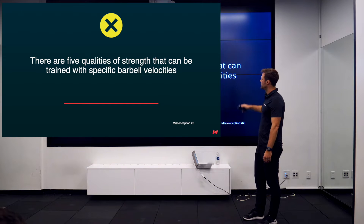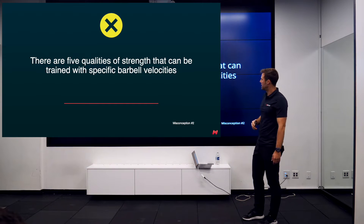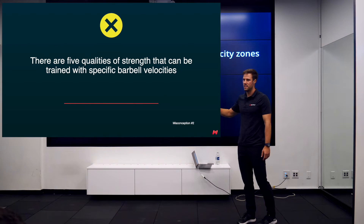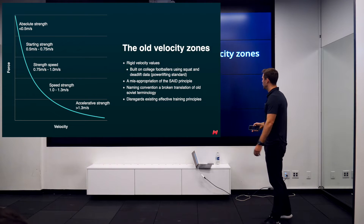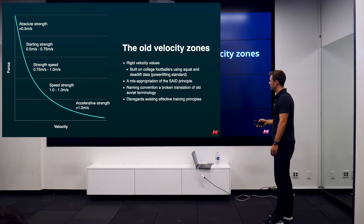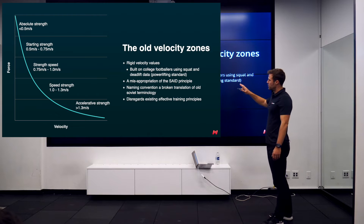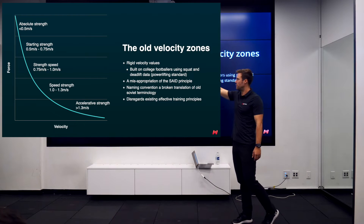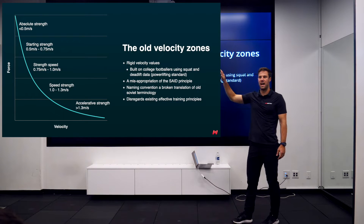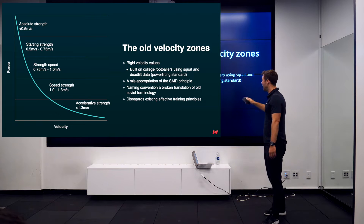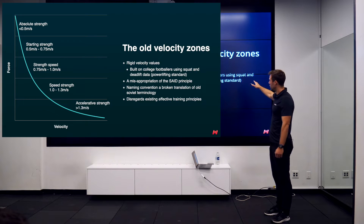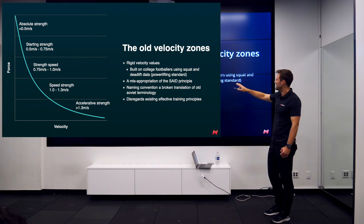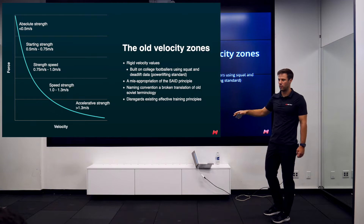Number two: there are five qualities of strength that can be trained at specific bar velocity. Have you guys seen this curve or something similar? I disagree with it. I don't think it is actually a good way of working with VBT. These rigid velocity values — absolute strength at 0.5, 0.5 to 0.75 — were built on some college football data using a conventional squat, a below-parallel squat, and a conventional straight-bar deadlift from the ground.